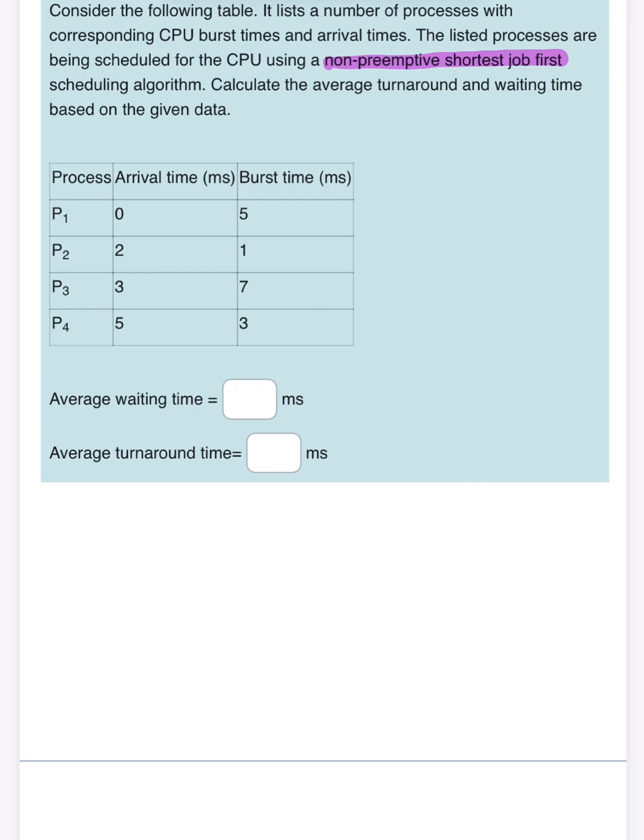What we need to do is find the average waiting time and average turnaround time. This is important to know: this is a non-preemptive algorithm. It means that we can't stop any process when they get CPU access. They need to finish their burst time and then leave the CPU.